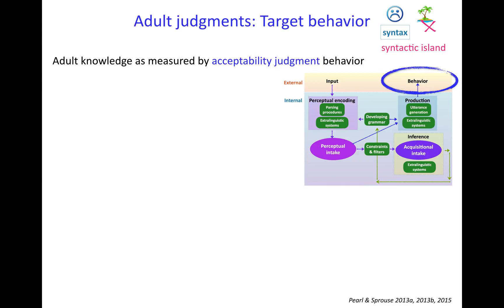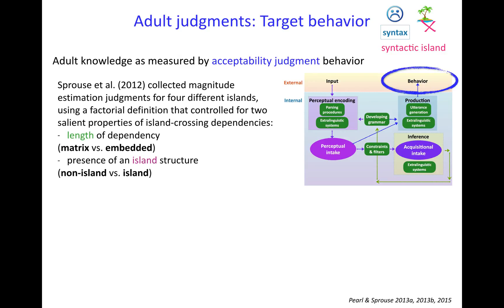Adult knowledge can be measured by acceptability judgment behavior, which is what Sprouse and colleagues in 2012 did in order to estimate adult knowledge of syntactic islands. They used something called magnitude estimation, which is a way of asking how much do you like this utterance, how acceptable do you find it — what magnitude of acceptability do you rate it.